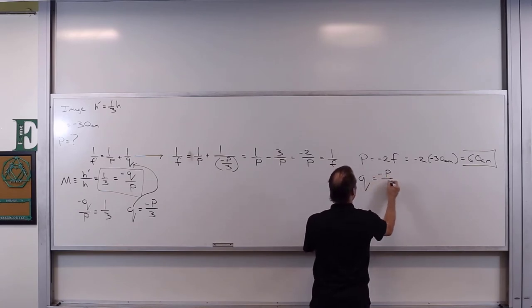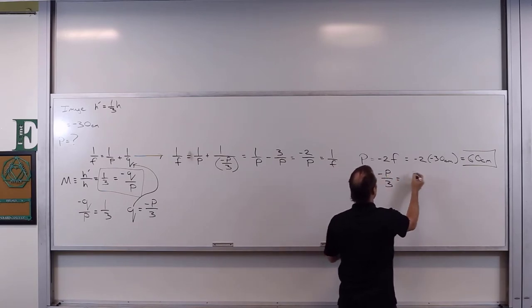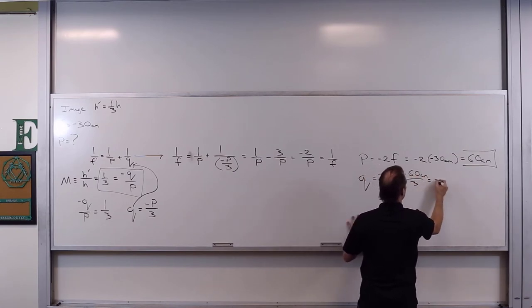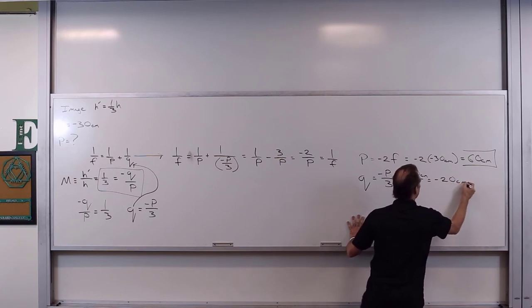where we've got q is equal to negative p over three, is then equal to negative 60 centimeters divided by three, which is then equal to negative 20 centimeters.